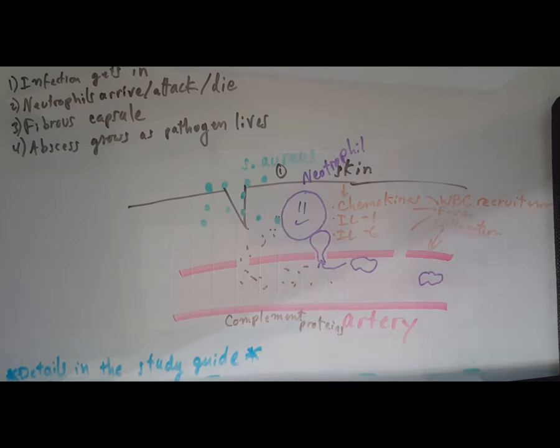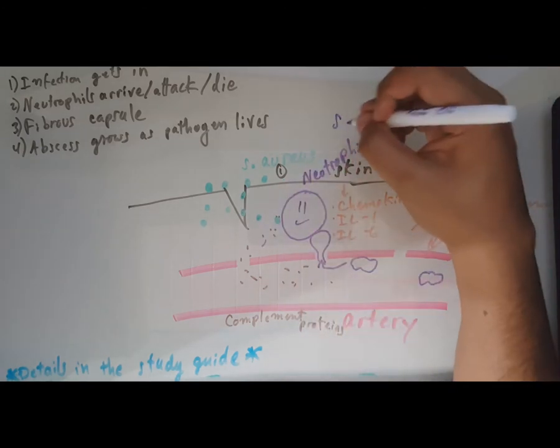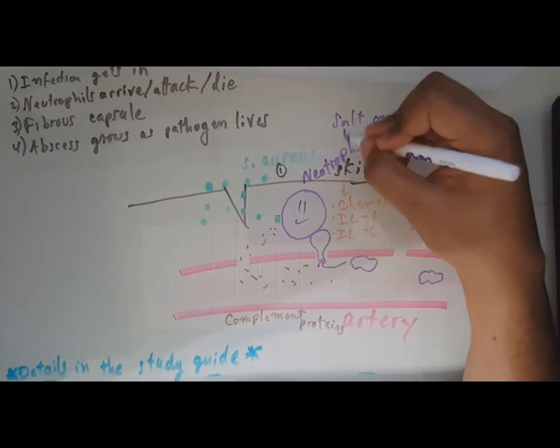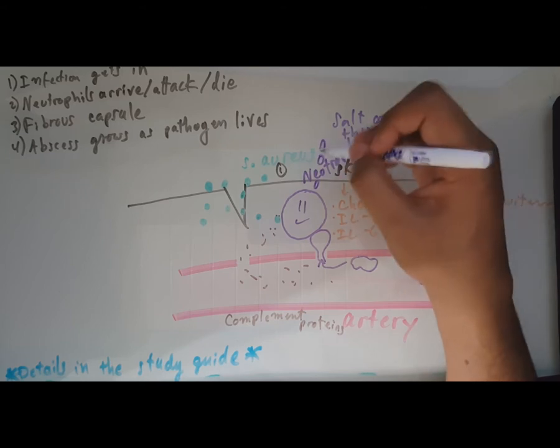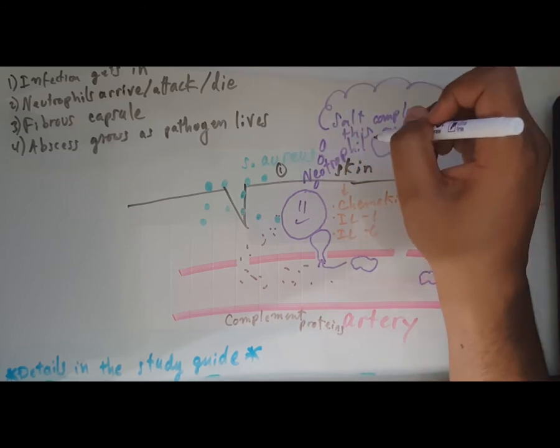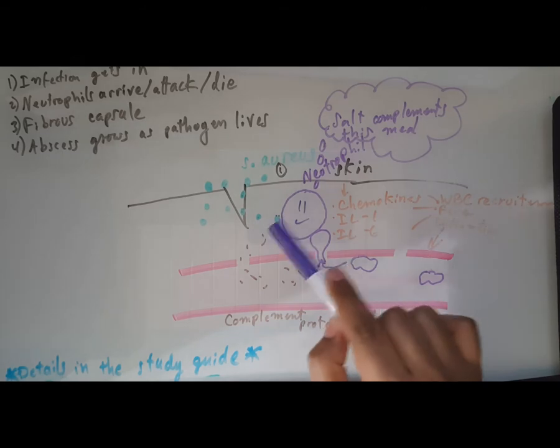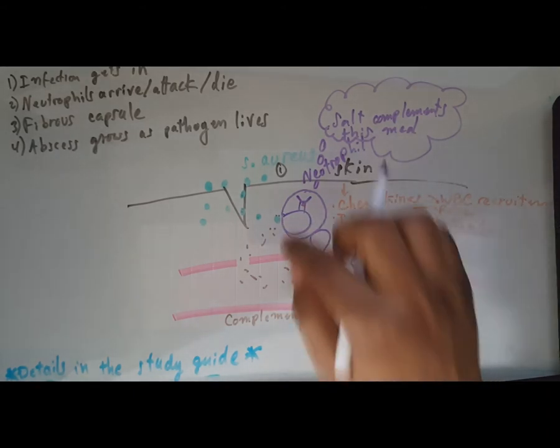Complement proteins are part of the complement cascade and make it easier for the neutrophil to opsonize or eat this bacteria. Let's say salt complements this meal. These complement proteins make it easier for the macrophage to eat this staph aureus - he's gonna open his big gaping mouth and try to phagocytize this bacteria.